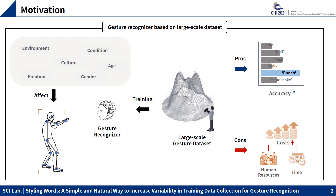It is a common approach to use a machine learning model with a large-scale dataset to improve gesture recognition accuracy. However, it takes high human resources and time to build a large-scale dataset. To solve this problem, we gave attention to variability — one of the key features. We propose a word-based instruction method called styling words that can induce enough and proper gesture variability even when building a small-scale dataset.